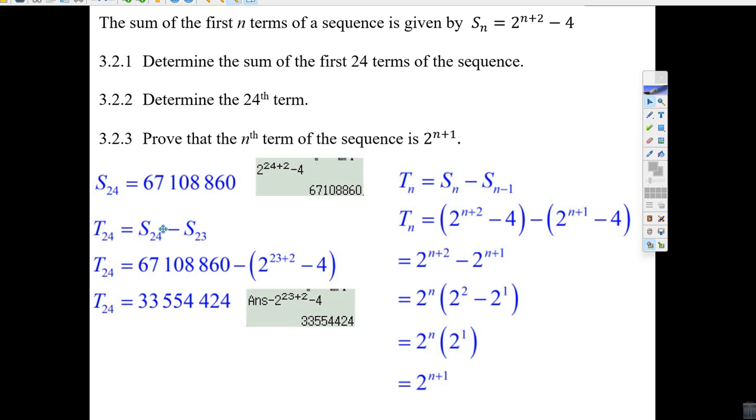If you sum 23 terms plus the 24th, that gives you this. So this equation makes sense. Well, we already know the sum of 24 terms. We just put in the formula for the sum of 23. We put in 23 plus 2 minus 4. We just put that in our calculator, and we get the answer for the 24th term. 33,554,424.